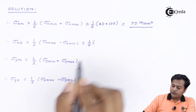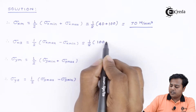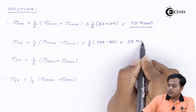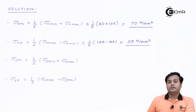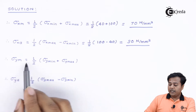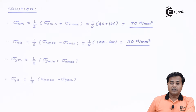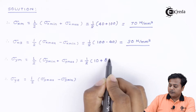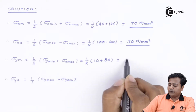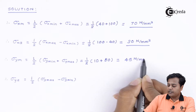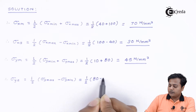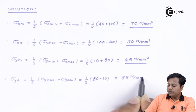The amplitude stress in the X direction is (max − min) / 2 = (100 − 40) / 2 = 30 N/mm². For the Y direction, using the same formulae with a minimum of 10 and maximum of 80, the mean stress in Y comes out to be 45 N/mm², and the amplitude stress in Y comes out to be 35 N/mm².